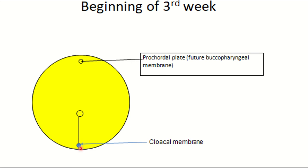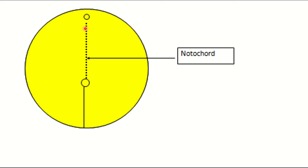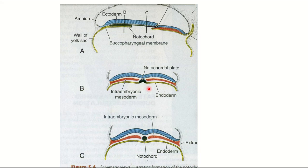Caudal to the primitive streak, another membrane is produced: the cloacal membrane. Here the epiblast is also tightly bound with the hypoblast, and upon rupture it produces the future anal orifice. From the primitive node, a cord-like structure develops known as the notochord. It forms the central axis of the fetus and extends from the primitive node up to the prochordal plate or buccopharyngeal membrane.